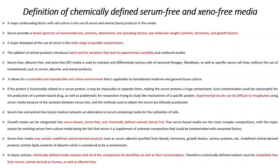Serum generally provides a broad spectrum of macromolecules, proteins, attachment and spreading factors, low molecular weight nutrients, hormones and growth factors which are necessary for cell growth. The drawback of using this serum is that it contains a wide range of possible contaminants, and the addition of animal products increases batch and lot variations which lead to experimental variability and confound studies. Therefore, it is preferable that we use serum free, albumin free, xeno free media to maintain our cells in culture, which allows for better reproducibility.